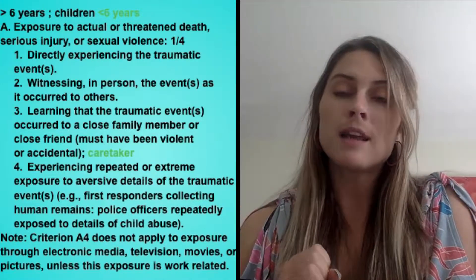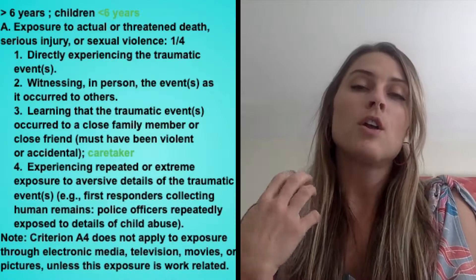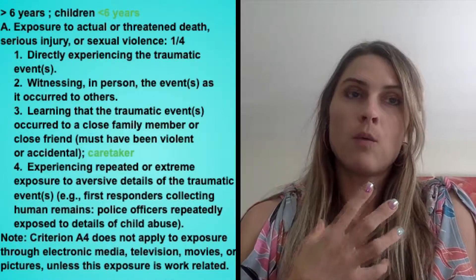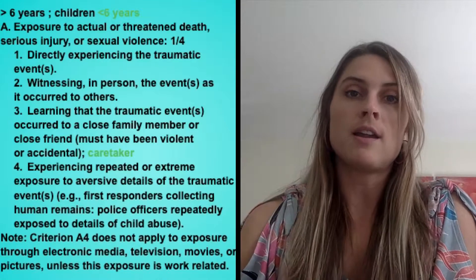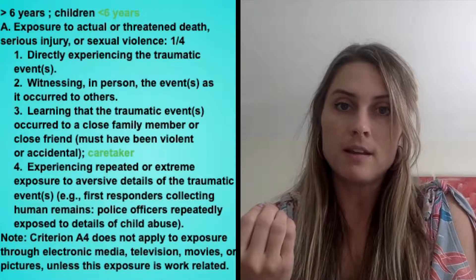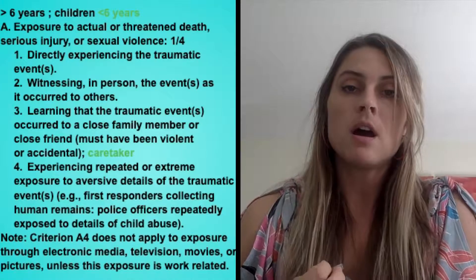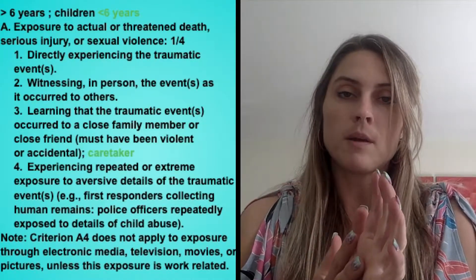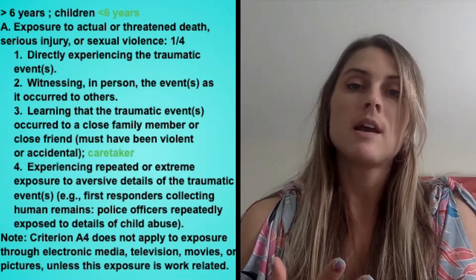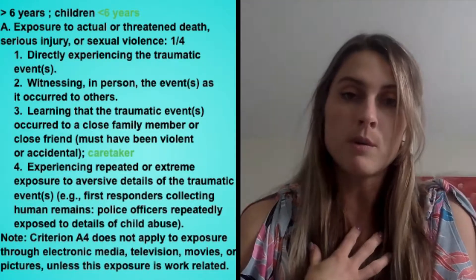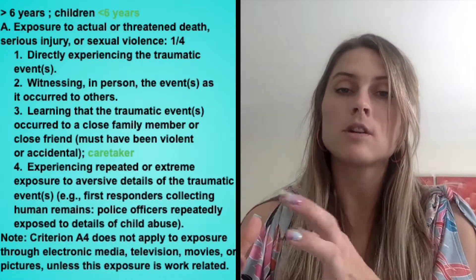The second is witnessing a traumatic event in person — you experienced the abuse, or you were a policeman who was shot, or you witnessed someone being shot and were there at the actual event. The third is learning that someone close to you, a close family member with whom you have a secure attachment, was involved in a traumatic event, and that becomes traumatizing to you because of that closeness. And the fourth is experiencing repeated or extreme exposure.